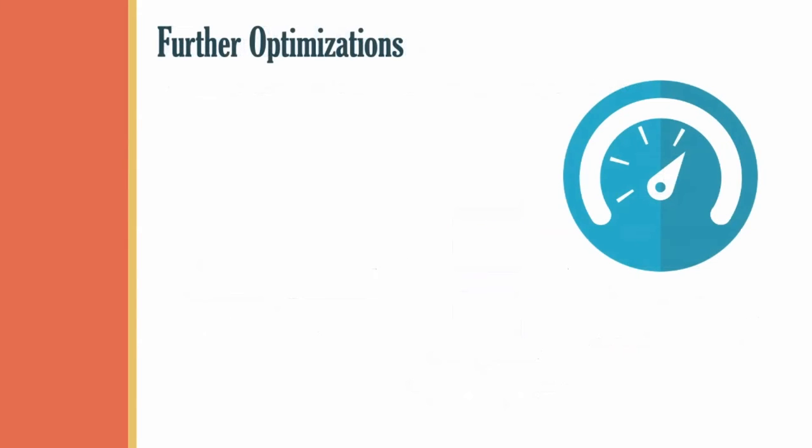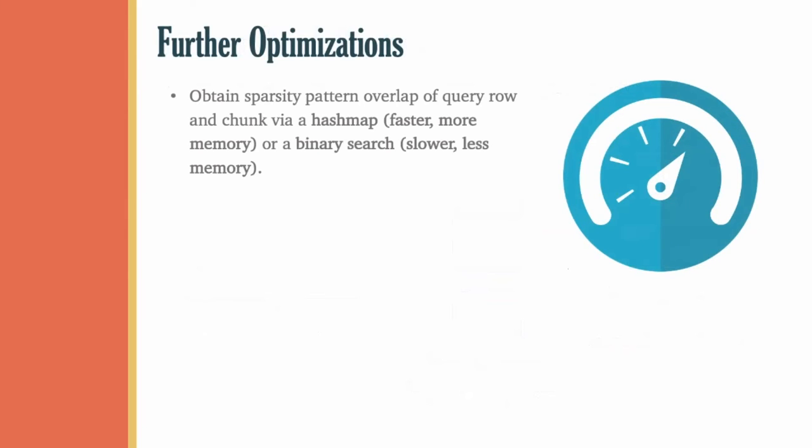We conclude the discussion of our method by talking about some optimization considerations. Note that using a hash map to compute non-zero overlap between query and chunk incurs an additional memory cost to storing the model. In comparison, using a sorted array of pointers incurs no extra memory cost over a simple compressed column storage format. However, to compensate, hash maps tend to be faster in practice.